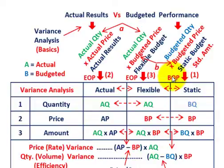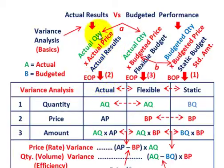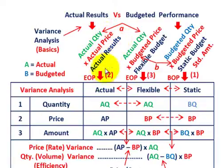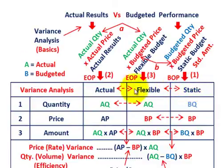You've done that at the beginning of the period. Now at the end of the period, you know your actual results — the actual quantity of inputs you had times the actual prices — and that gives you your actual results. So at the end of the period you know your actual amounts, and you also know your static or standard amounts.